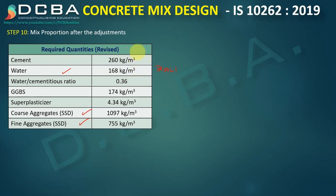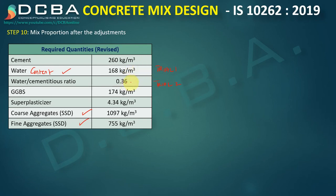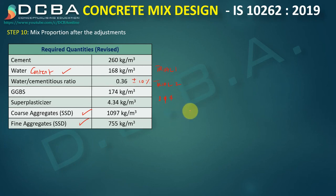These revised quantities constitute Trial Mix 1. Using these proportions, you cast concrete and check for required workability and segregation. If unsatisfactory, Trial 2 adjusts the water content up or down. Trials 3 and 4 vary the water-cementitious ratio by ±10% and recheck workability. This concludes today's lecture. The next section will cover high-strength concrete design for M70 grade.